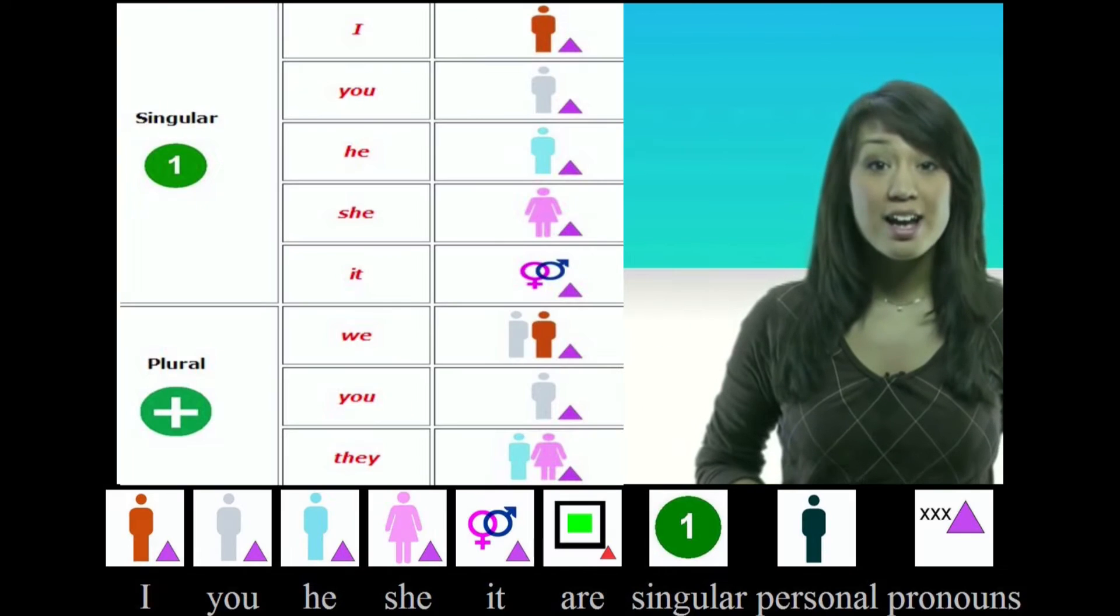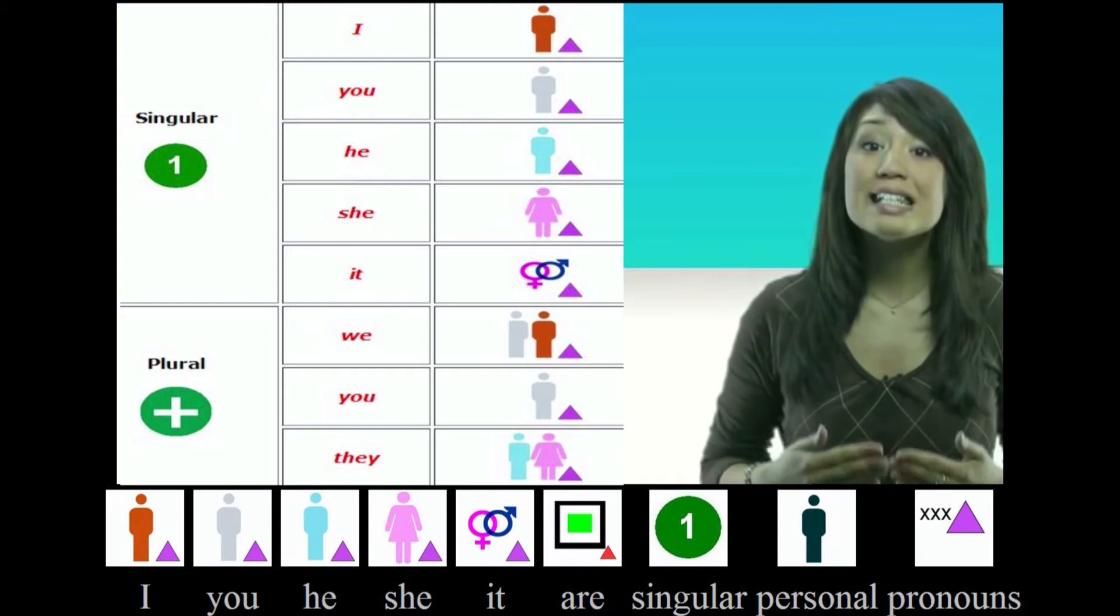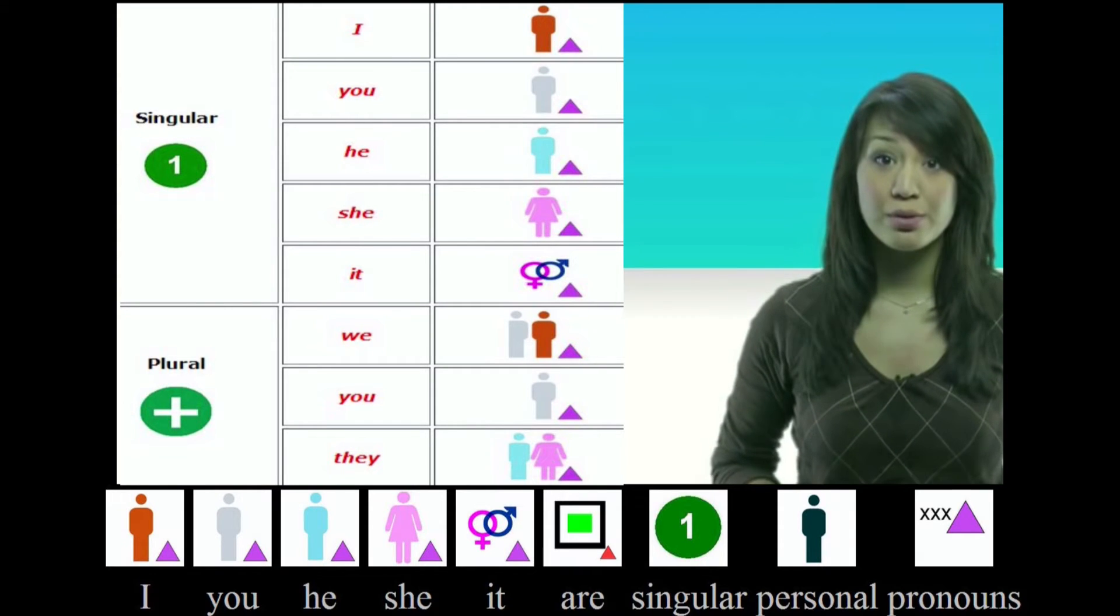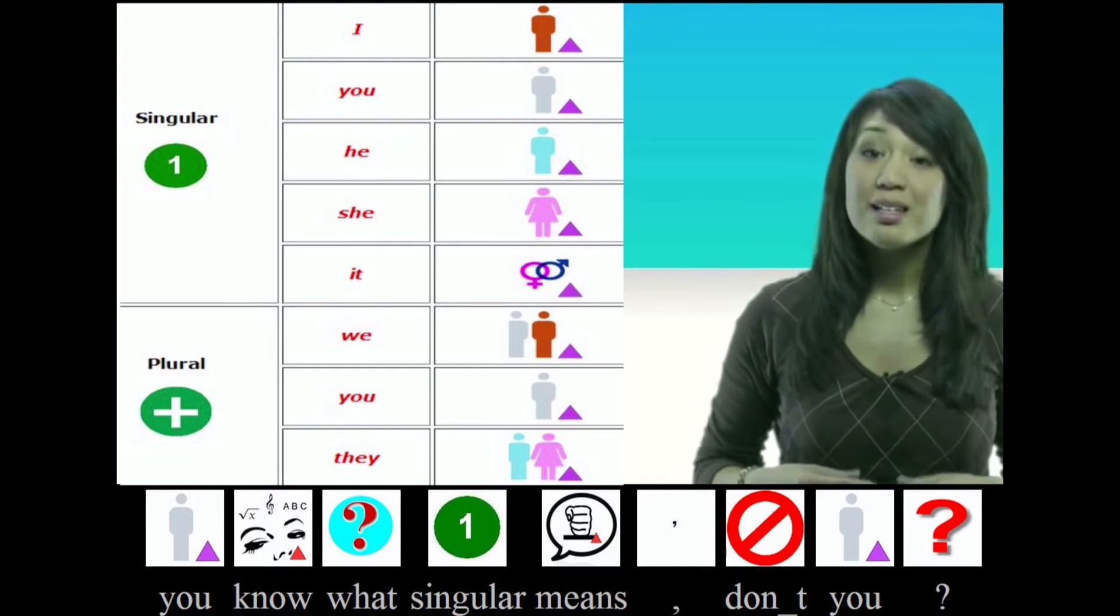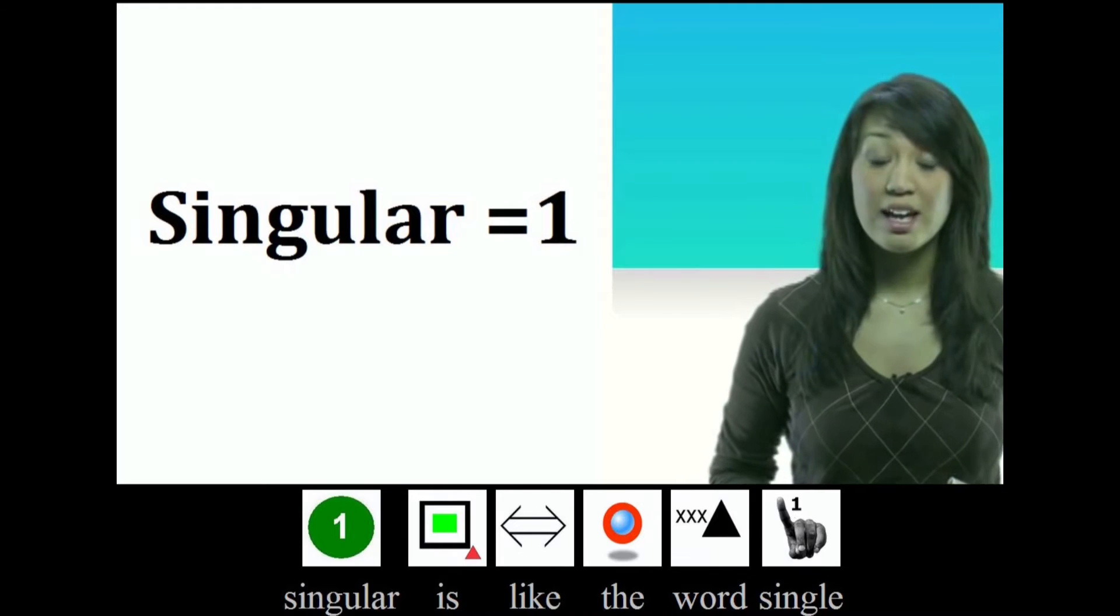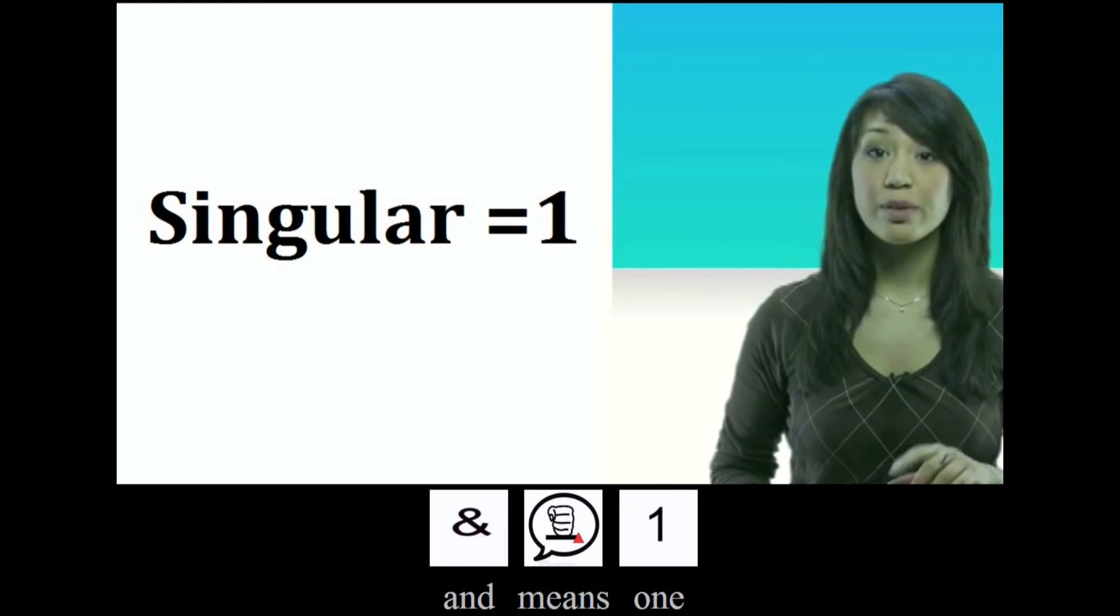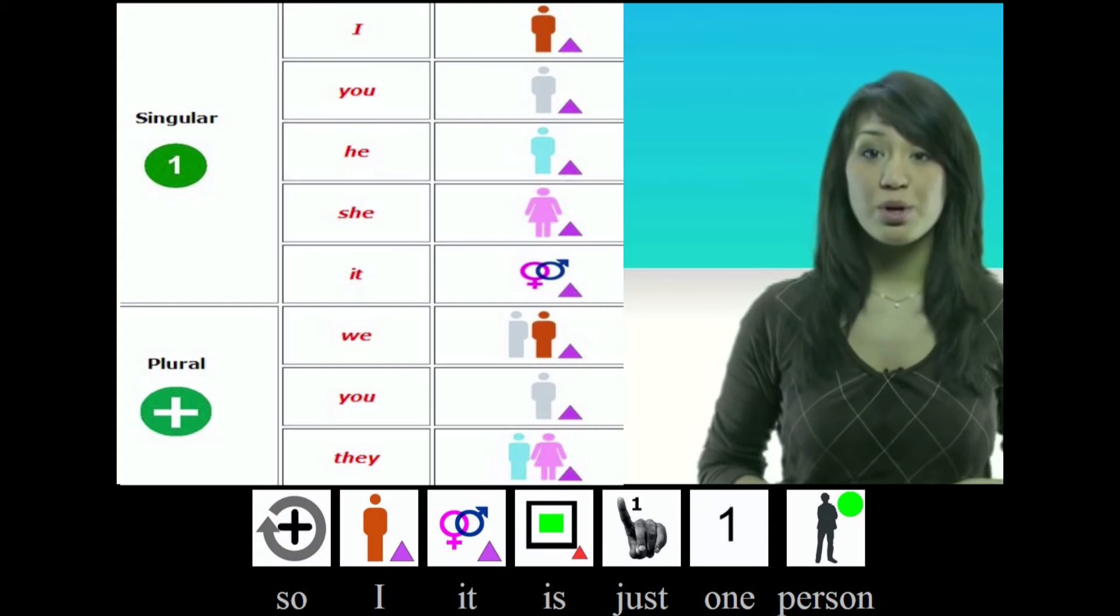I, you, he, she, it are singular personal pronouns. You know what singular means, don't you? Singular is like the word single and means one. So I is just one person.